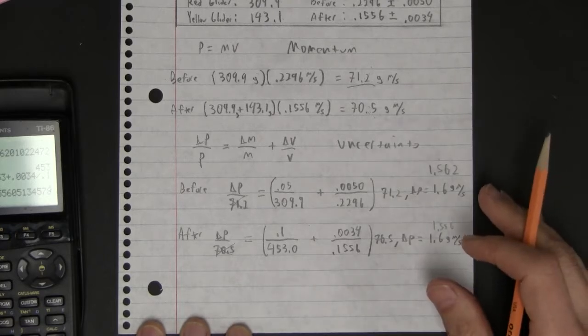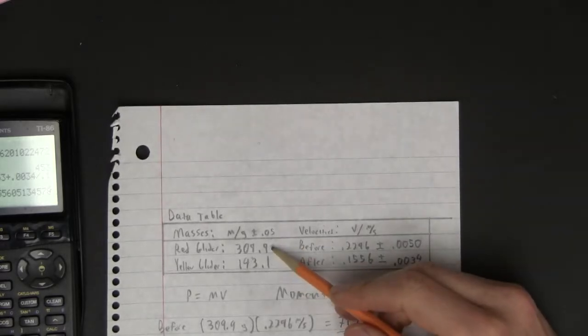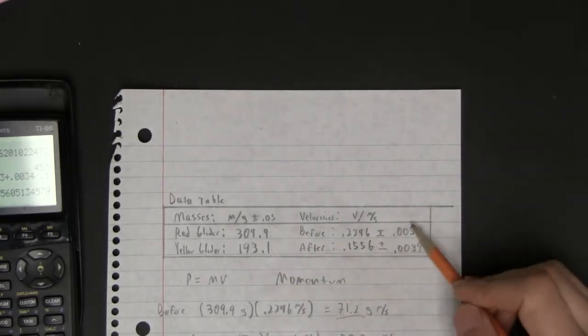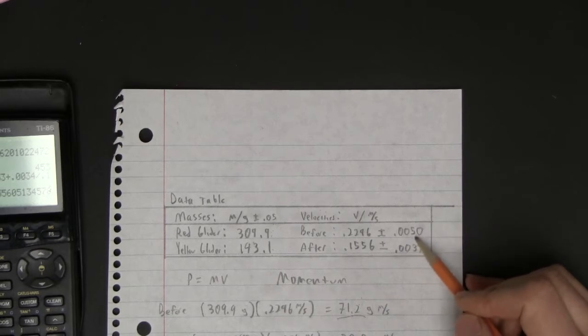The first thing you do is list sources of error. I can imagine that we had inaccuracies measuring these masses, inaccuracies measuring these velocities. That's pretty mundane.